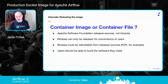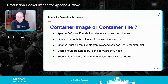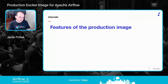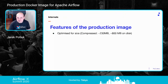By default, the Apache Software Foundation releases sources, not binaries. Everything we do — even convenience binaries — should be rebuildable from release sources. Whenever we release something officially, there must be a way to build it from those sources. That's what happens with PyPI packages, for example. The idea is that users should be able to rebuild the software they need. So both the source container file and the binary image on Docker Hub serve different users.